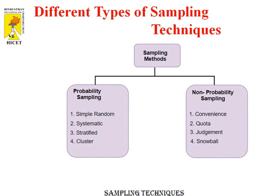Now let us see the different types of sampling techniques. There are two types: probability sampling and non-probability sampling. In probability sampling, every element of the population has an equal chance of being selected, giving us the best chance to create a sample that is truly representative of the population. Examples include simple random sampling, systematic random sampling, stratified sampling, and cluster sampling. In non-probability sampling, elements do not have an equal chance of being selected, and there is a significant risk of ending up with a non-representative sample which does not produce generalizable results. Methods available are convenience, quota, judgment, and snowball sampling.